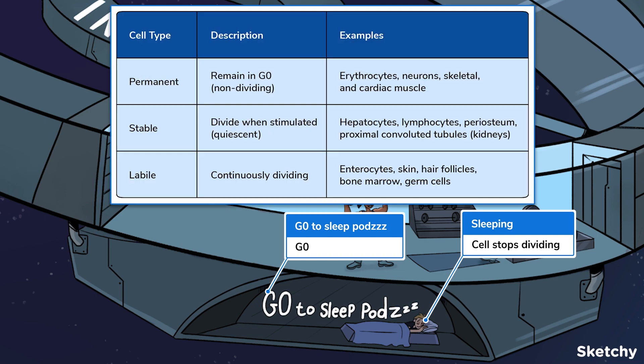Some cells can stay dormant. Permanent cells like erythrocytes, neurons, skeletal, and cardiac muscle are completely differentiated and therefore remain in G0. Then there are stable cells such as hepatocytes, lymphocytes, the periosteum, and proximal convoluted tubule cells found in the kidneys — they can enter and exit G0. In contrast, labile cells such as enterocytes, skin, hair follicles, and germ cells never go into G0 because they have high turnover rates.